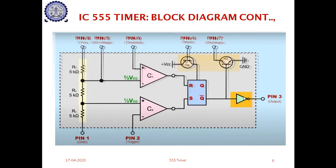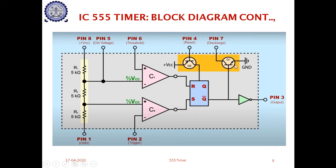The block diagram also contains an inverter followed by two transistors. We will see the function of these transistors in the overall operation of the 555 timer. Pin number 1 is ground, pin number 2 is trigger, pin number 3 is output, pin number 4 is reset. Whenever we want to reset the 555 timer, a low signal can be applied to pin 4, since the RS flip-flop used here is an active-low flip-flop. Pin number 5 is control voltage, pin 6 is threshold, pin 7 is discharge, and pin 8 is supply voltage.